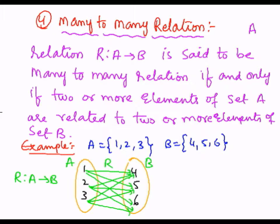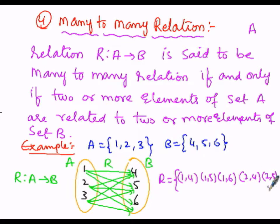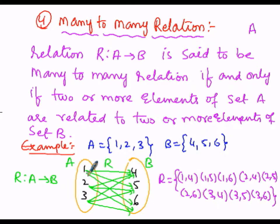From this it is concluded that two or more than two elements of set A are related to two or more than two elements of set B. The relation R is given by ordered pairs: (1,4), (1,5), (1,6), (2,4), (2,5), (2,6), (3,4), (3,5), and (3,6). Therefore two or more elements of set A have relationships with two or more elements of set B, so this relation comes under the many-to-many relation.